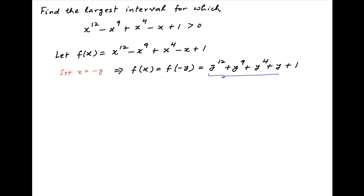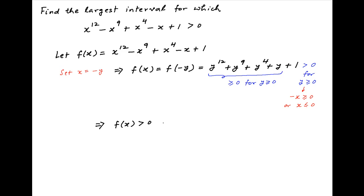The sum of the first four terms of this expression is greater than or equal to 0 for y greater than or equal to 0, and therefore this whole expression is strictly greater than 0 for y greater than or equal to 0. Since y equals minus x, this expression is strictly greater than 0 for x less than or equal to 0. In other words, f(x) is strictly greater than 0 when x is less than or equal to 0. Let's call this Result 1.